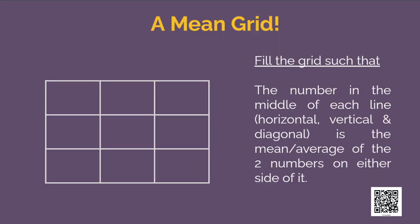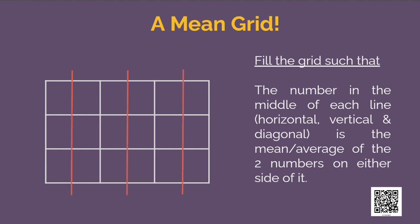There is an empty 3 by 3 grid and you need to fill the grid with any numbers. But there is a condition. The number in the middle of each line — that is horizontally, vertically and also diagonally — should be the average of the two numbers on either of its sides.